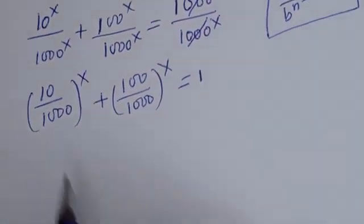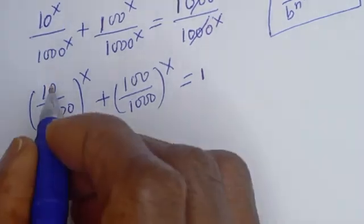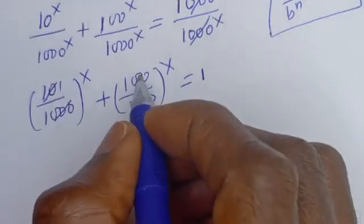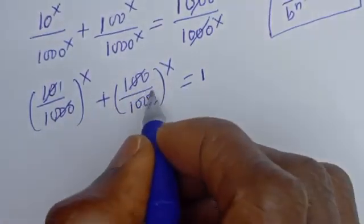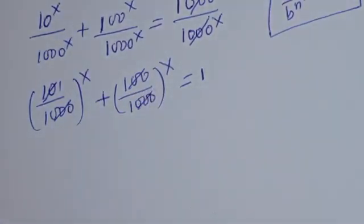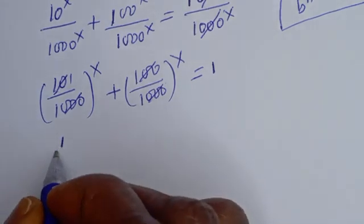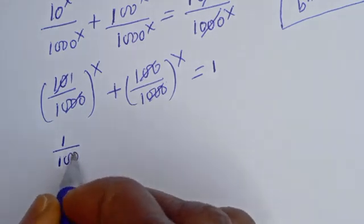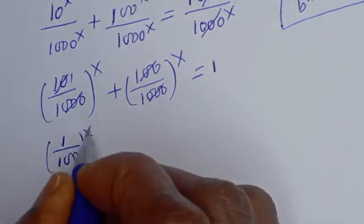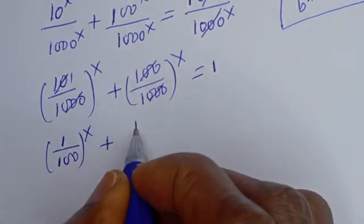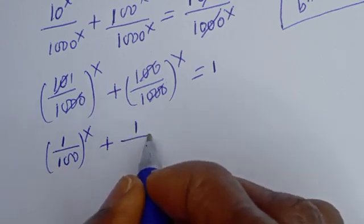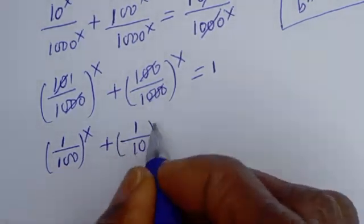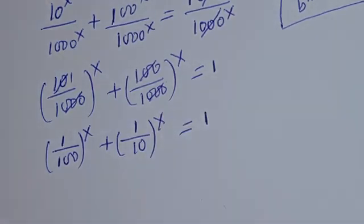Then here we have 10 over 1000 and 100 over 1000. So this becomes 1 divided by 100, to the power of S, plus 1 divided by 10, to the power of S, is equal to 1.